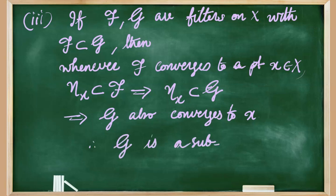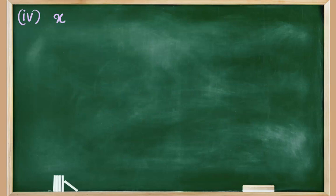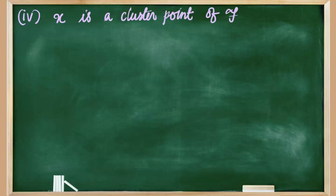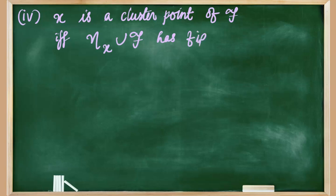Whenever the filter F is convergent, so is the filter G. Therefore we say that G is a sub-filter of F, even though G is a superset of filter F. We can also observe that if x is a cluster point of filter F, then N(x) ∪ F will have FIP. This is in fact an if and only if condition using the definition of cluster point of a filter.